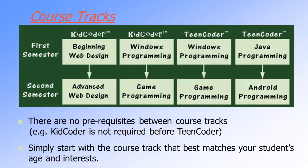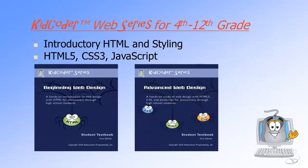We have four different course tracks that teach different technologies to different age groups. What we focused on today was the beginning web design course — we covered a very small subset of topics from that first semester. You can continue to the second semester of advanced web design, or if you're interested in other subjects like Windows and game programming, or Java and Android programming, you can start with the first semester course in any course track and we'll teach you all required skills from the ground up. When you order our products, you get physical textbooks and CDs in the mail.